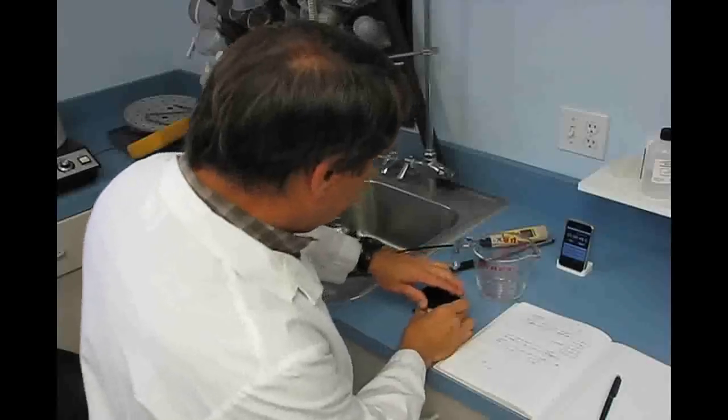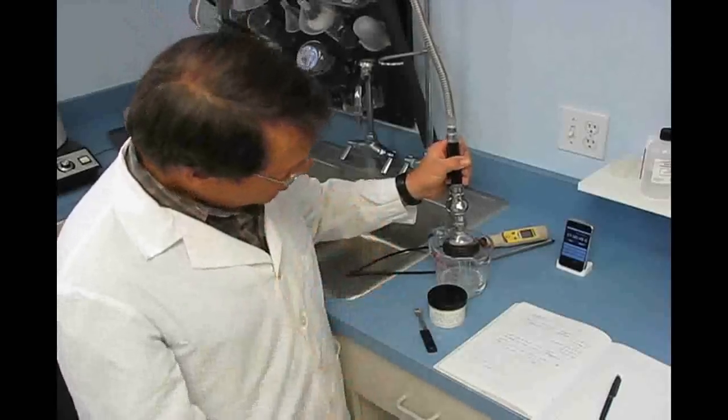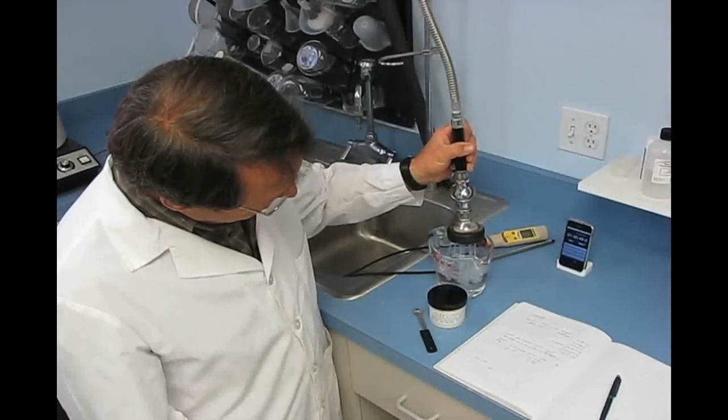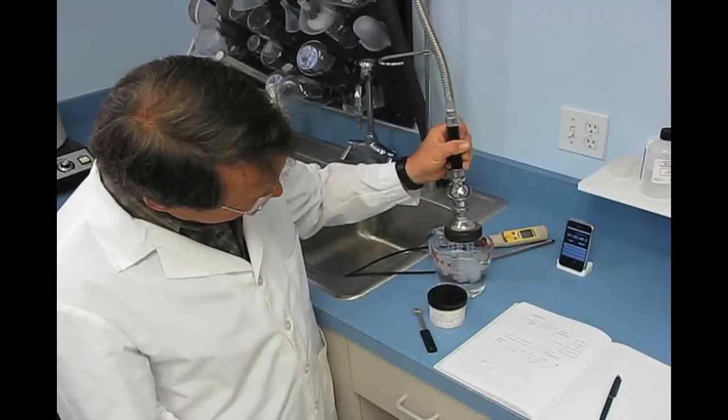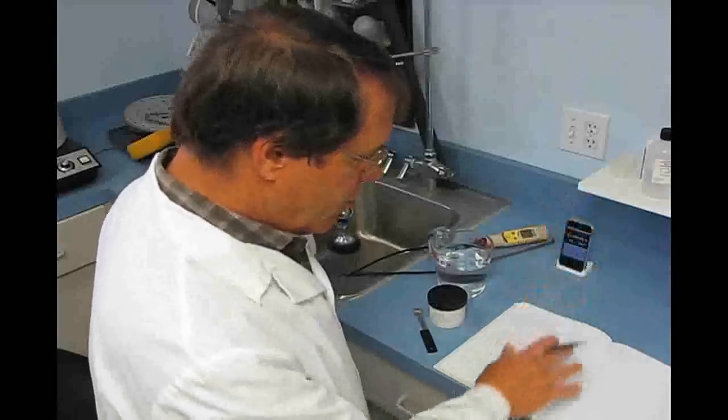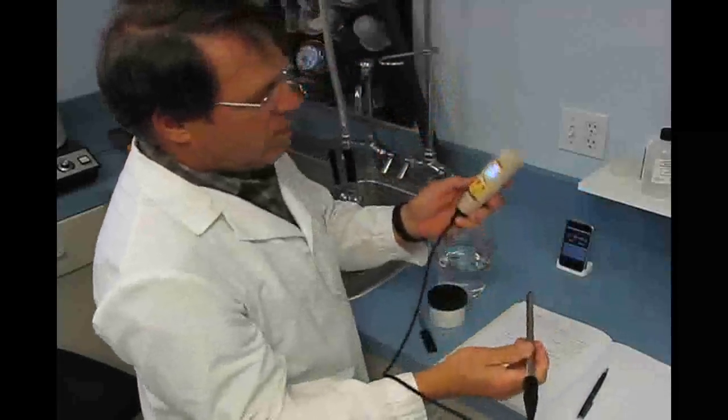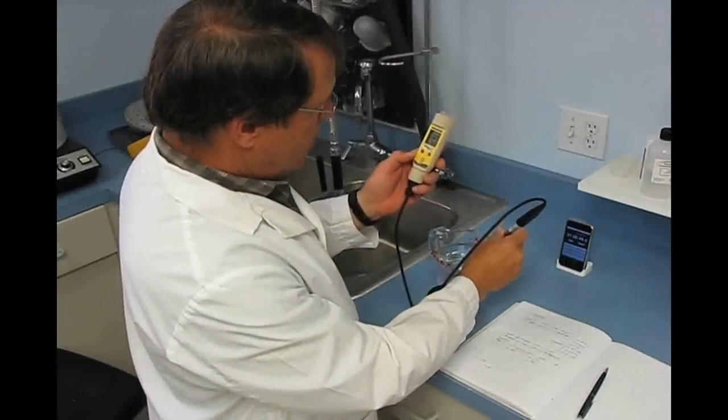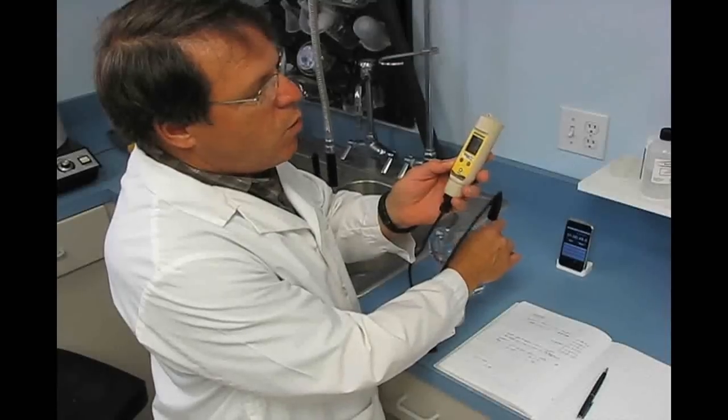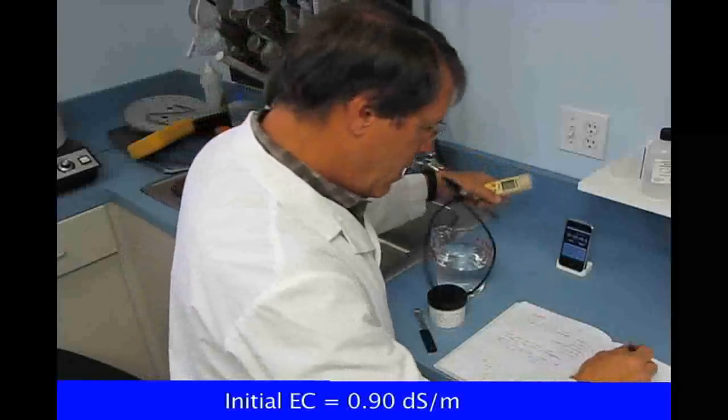What we want to do is fill up the beaker. I'm using tap water. I would suggest that you just go ahead and use your irrigation water. That will be just fine. Fill it up to the top to 500 cc's. Turn on your EC meter and take a reading of the water before you put anything into it. The reading I'm getting right now is 0.90. So that's the starting number, 0.9. Write that down, initial number.